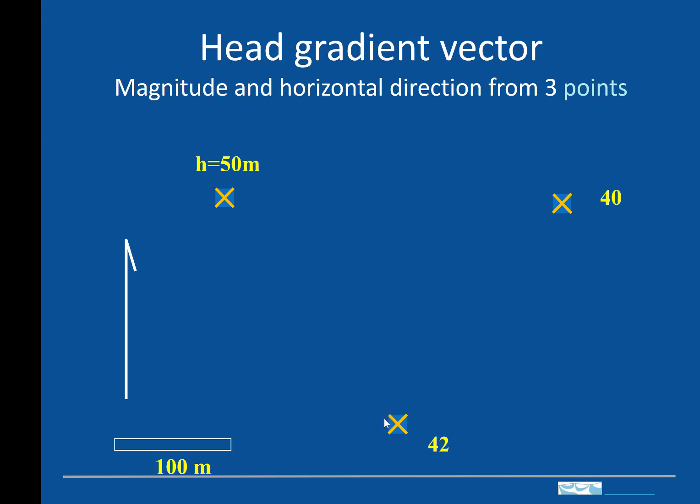And we want to determine the gradient vector. And by doing that, what we need to do in order to do that is assume that these points lie on a surface that is planar between these three points within this area.